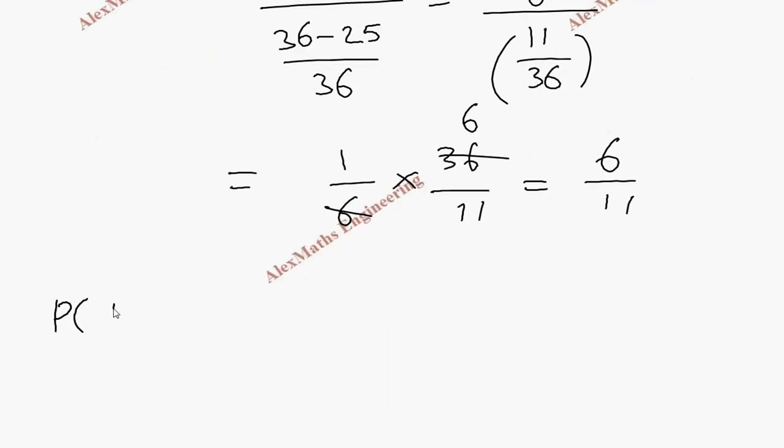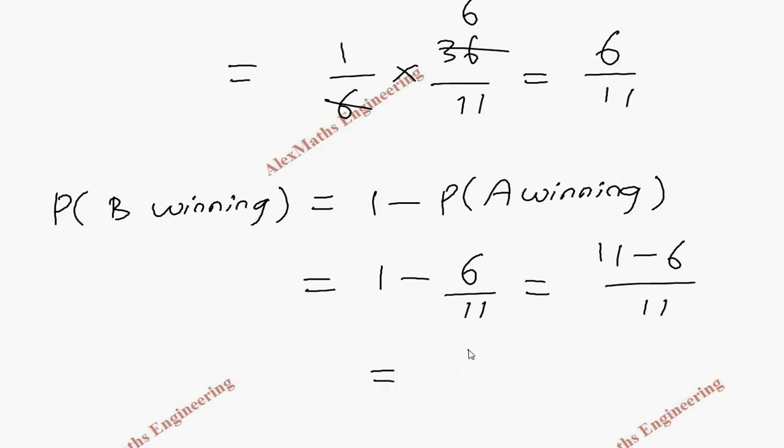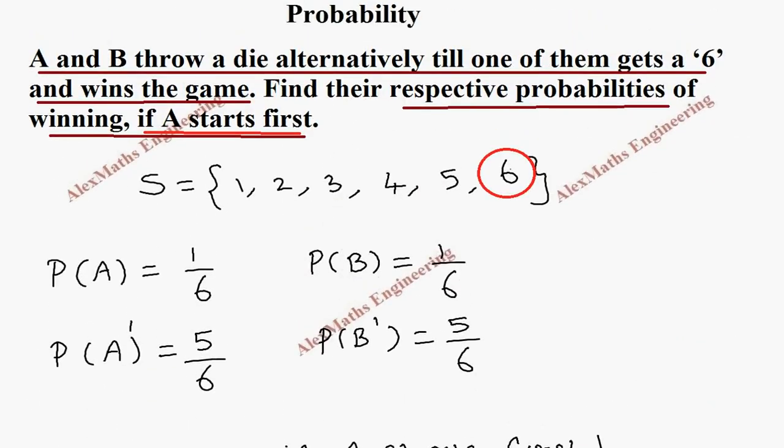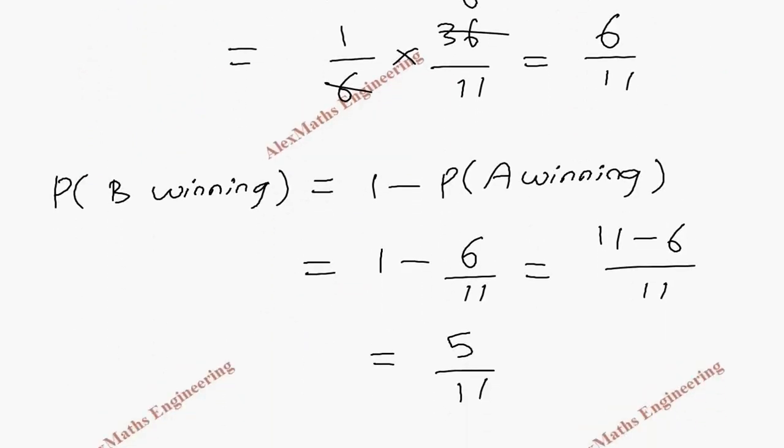Now P of B winning is nothing but 1 minus P of A winning, that is 1 minus 6 by 11. We take LCM, 11 minus 6, which is 5 by 11. So when A starts the game, the probability of A winning is 6 by 11 and B winning is 5 by 11.